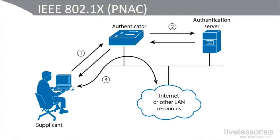Looking at the diagram, we see the three parties of this architecture. On the left-hand side is the supplicant — the end user, the device they're using, and a software agent running on that device. It could be a native supplicant, like Windows 10's native dot one X supplicant, or a third-party supplicant such as Cisco AnyConnect mobility client.